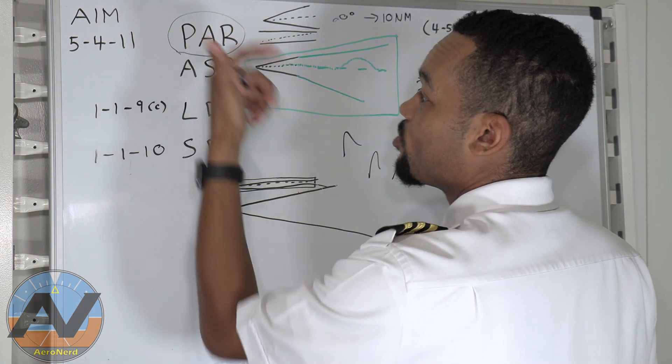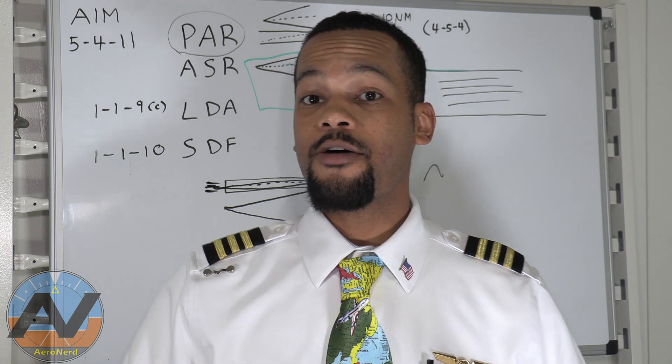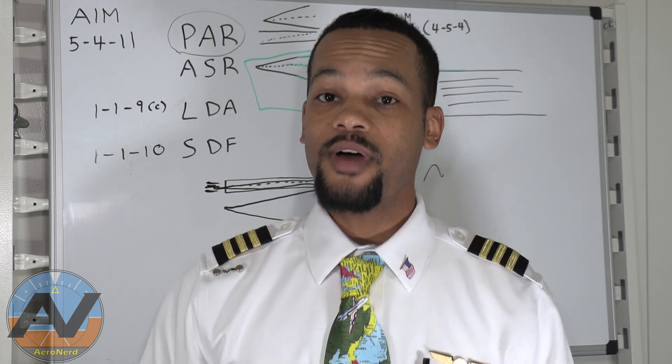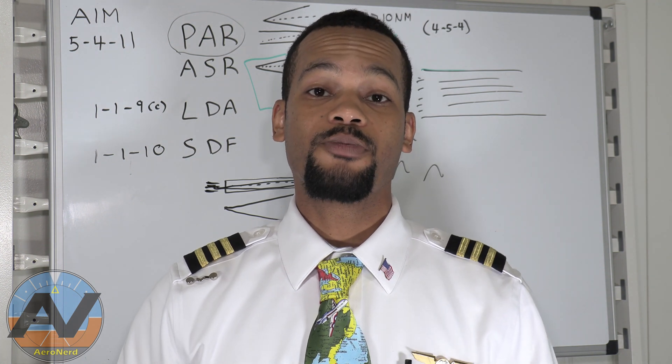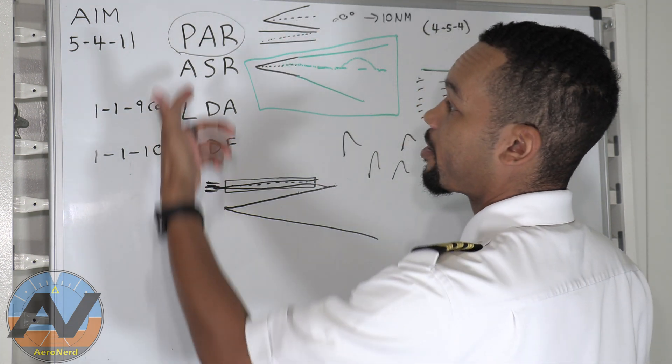So what these are, is you can request, if the tower provides that service, you can request 777 Hotel Echo, I would like to request the precision approach radar service. So the tower will actually provide you the precision approach radar.